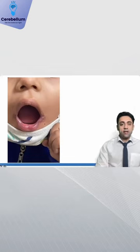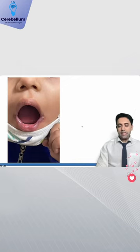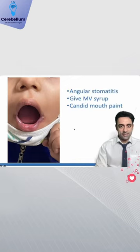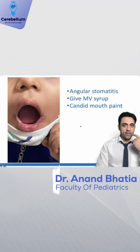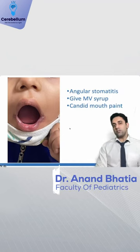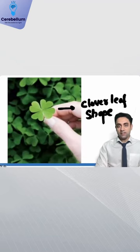Point number two: the angle of the mouth of the baby has some lesions. What is this? This is nothing but chelitis, or angular stomatitis — basically inflammation at the angle of the mouth, due to multivitamin or iron deficiency.